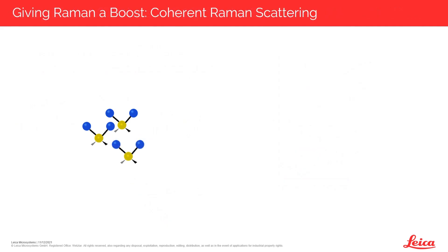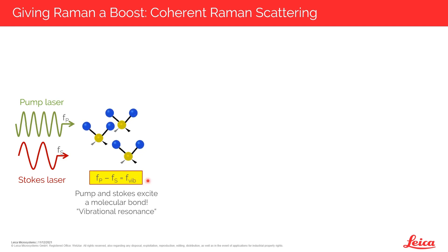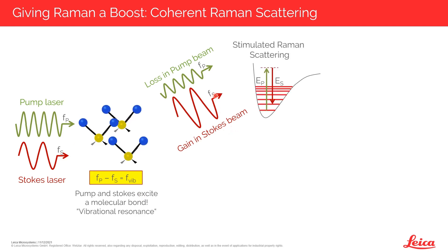For a long time, researchers have been thinking of ways to give the Raman effect a boost — to make it more efficient and faster. The exciting outcome of this is Coherent Raman Scattering. It starts out similarly to spontaneous Raman: we shine a pump laser onto our sample of molecules, but now we also shine a second laser, the Stokes laser, where the frequency difference between the two laser fields is tuned to exactly match one of the vibrational frequencies of our sample. The combined action of both laser fields very efficiently excites the entire ensemble of molecules to vibrate — this is vibrational resonance. As a result, we see a loss of photons in the higher energy pump beam and a redistribution of photons into the lower energy Stokes beam. These intensity changes can be measured, and this is the basis of the stimulated Raman scattering effect.